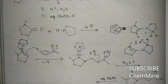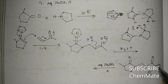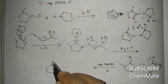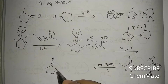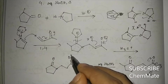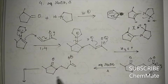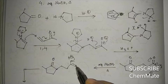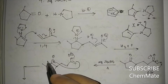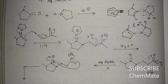When treated with aqueous NaOH and heat, the hydroxide abstracts a proton to form the corresponding enolate. Then an intramolecular aldol condensation takes place — the pi bond attacks the carbonyl carbon — forming a six-membered ring.